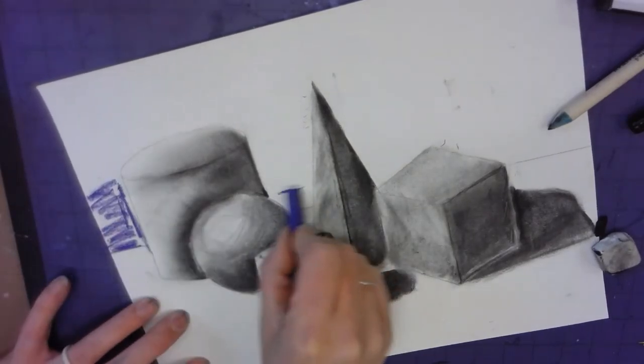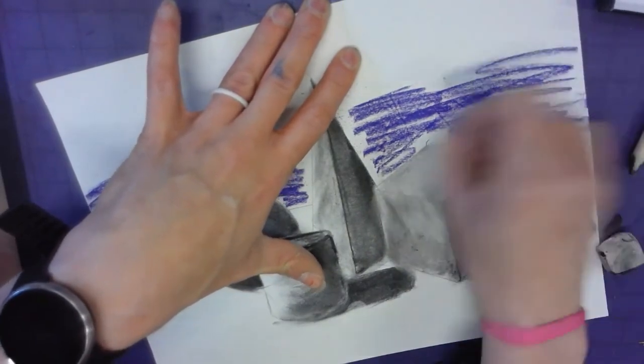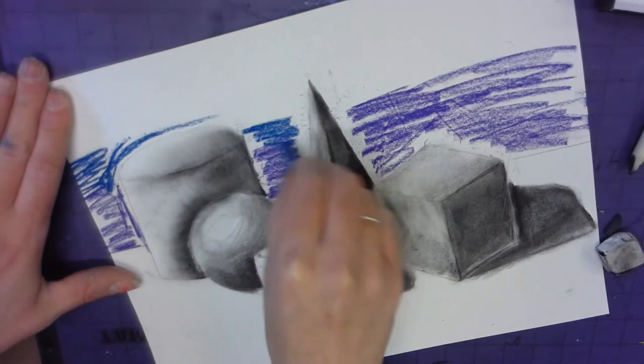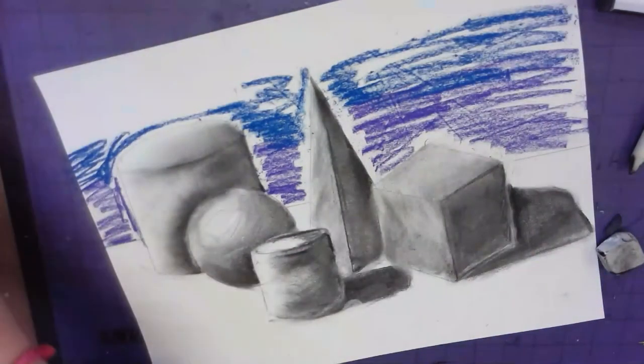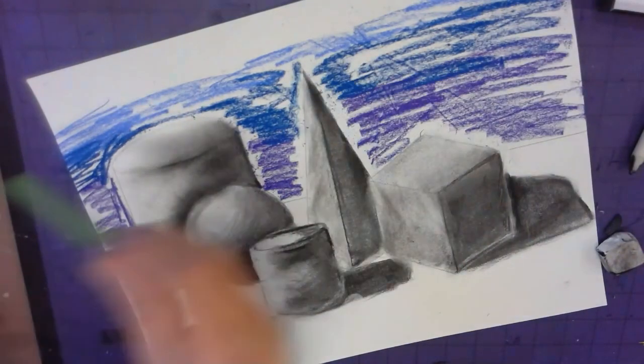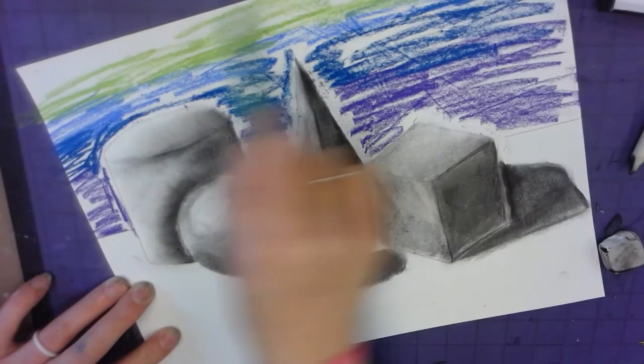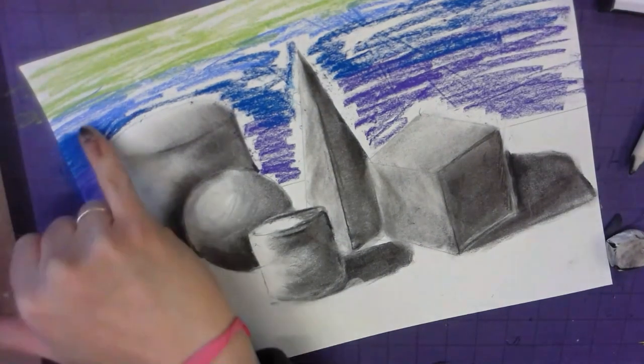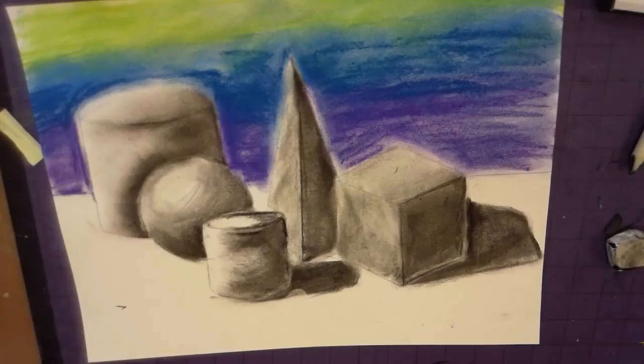Chalk pastels are kind of like, think of it like colored charcoal. Just going to kind of scribble it. Blend it into a blue, because blue could be next with it. I'm going to go to a lighter blue. Lighter green. I'm going to smear it out.